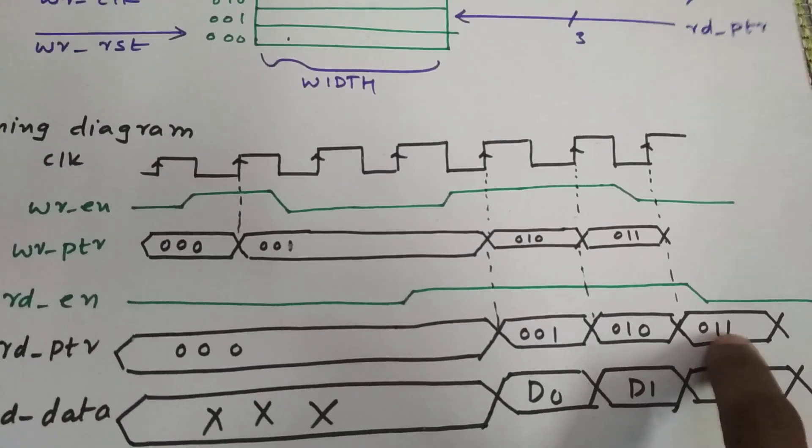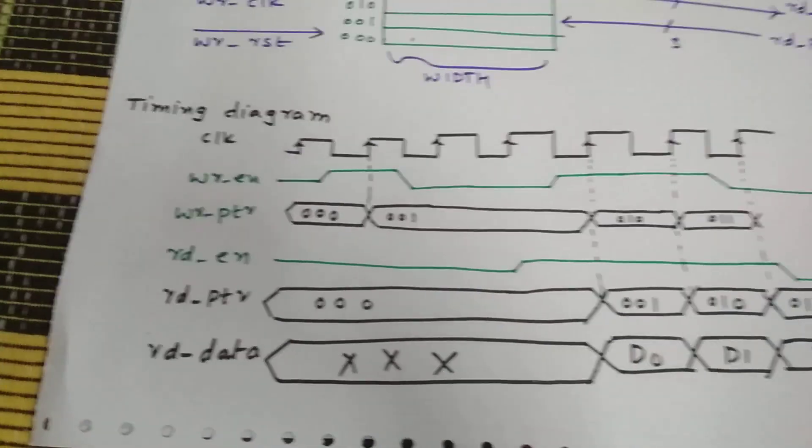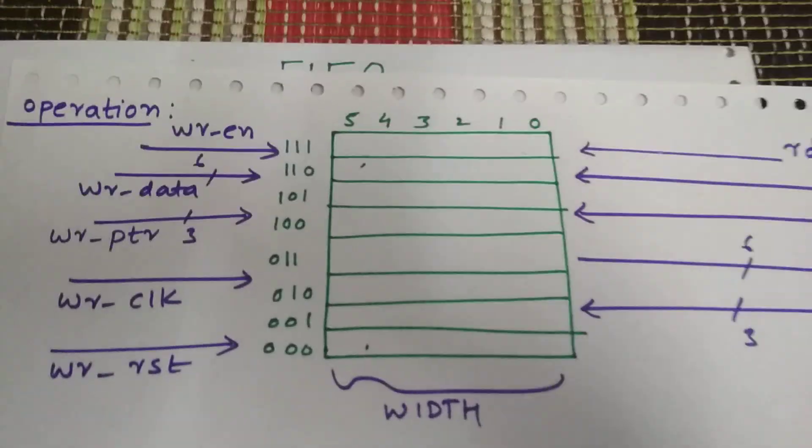At 010, we are reading D1, and at 011, we are reading D2. So this is the basic operation of how a FIFO looks.